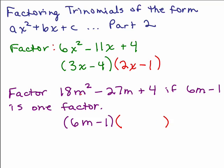So, I'm trying to get 18m squared for my first term. So, that must be 3m and I'm trying to get a positive 4 for my last term. I have negative 1 times what will give me that positive 4? It will have to be a minus 4.